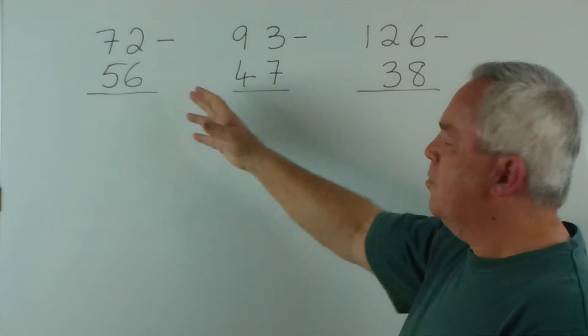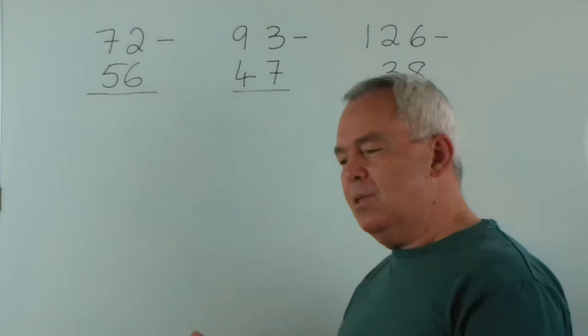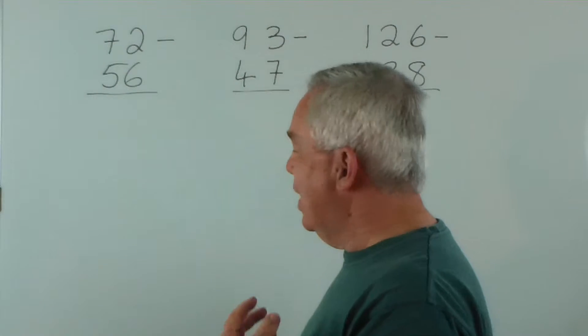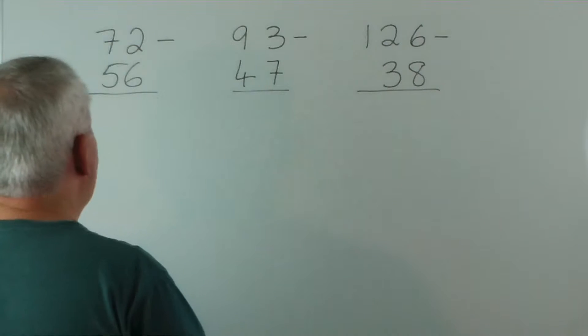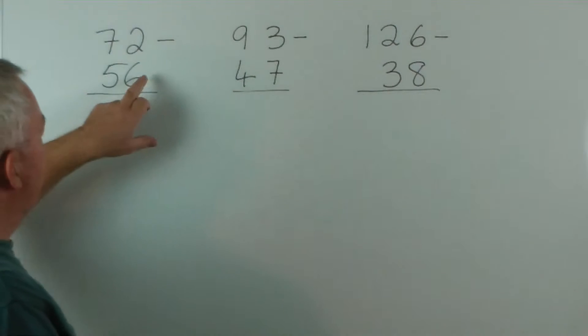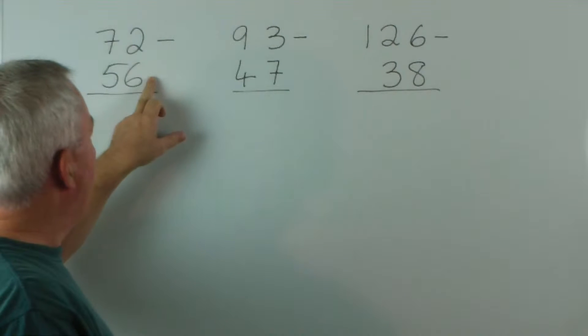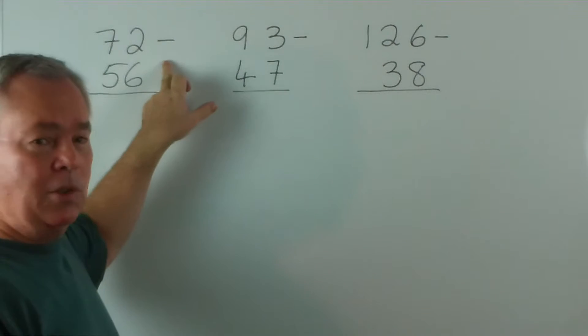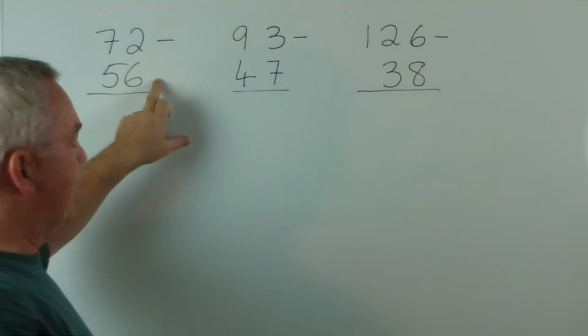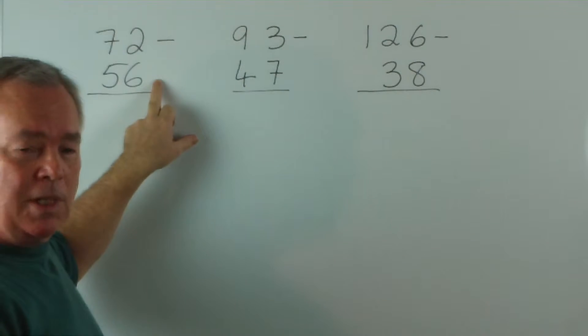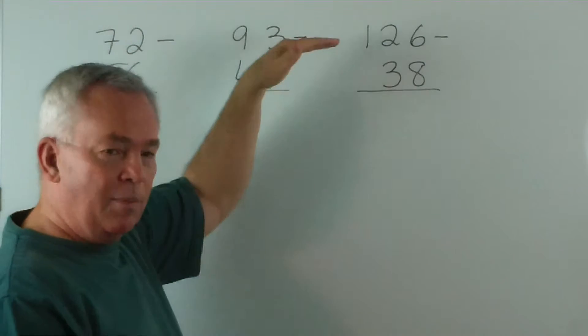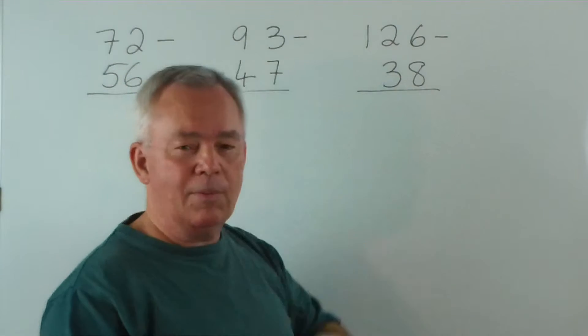So if we had to perform these subtractions mentally, what are some of the nice methods we could use? In this one, we take note that the bottom number can be rounded up to a whole group of 10. So 56 is not far short of 60, 47 would move up to 50, and 38 would move up to 40.